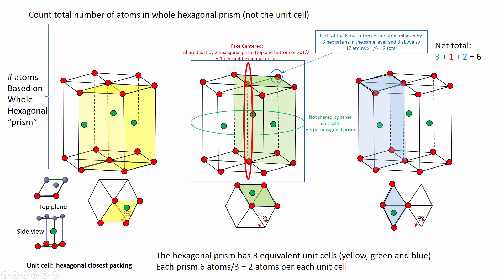Since we have 12 corner atoms on top and bottom together, 12 times one-sixth is two. Summing it all up, we have a total of six atoms in this hexagonal prism. But the hexagonal prism consists of three rhombohedral unit cells of hexagonal closest packing, so six divided by three is two.